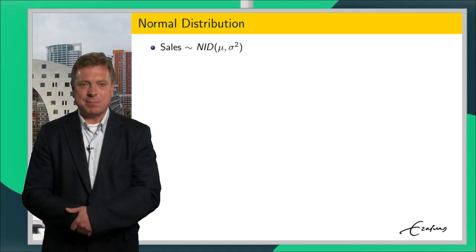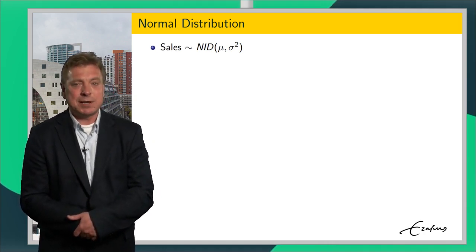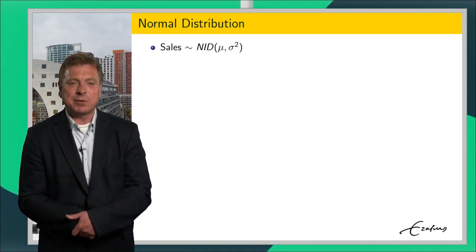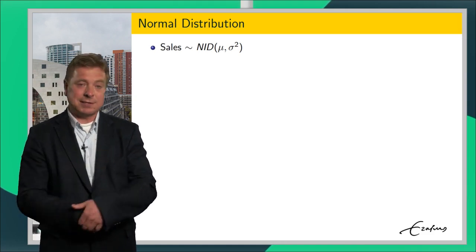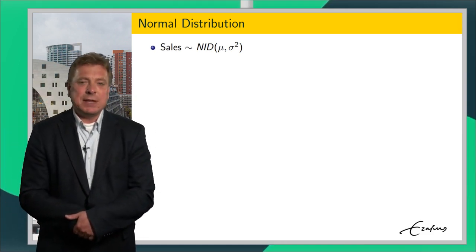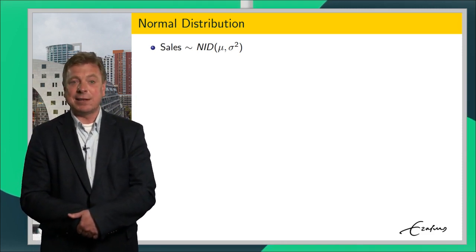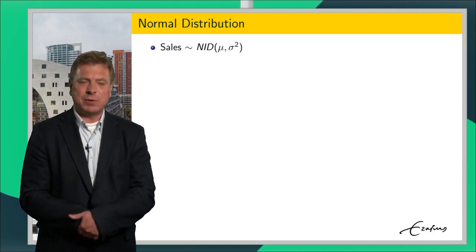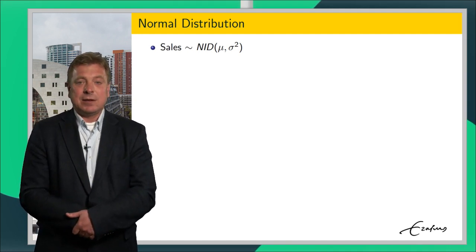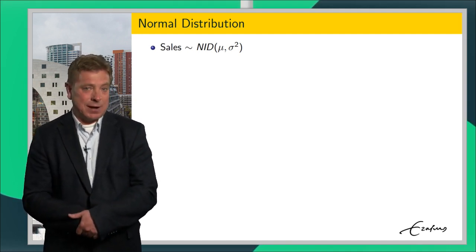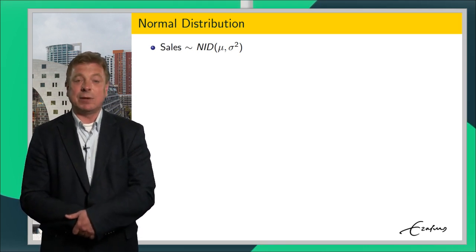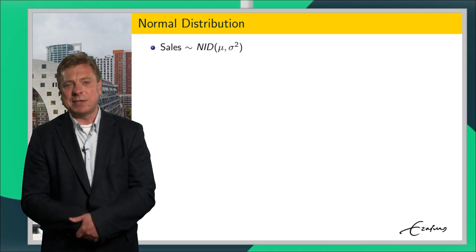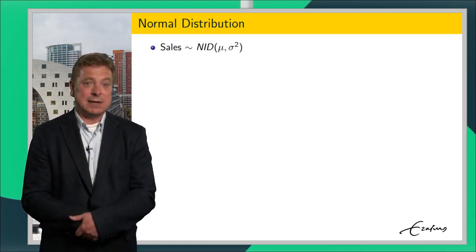The histogram of our sales data may suggest that the sales distribution can be approximated by a normal distribution. A simple way of summarising the 104 observations on sales is that the observations are considered to be independent draws from the same normal distribution with mean mu and variance sigma squared, abbreviated as NID. Note that we use Greek letters mu and sigma squared for parameters that we do not know and that we want to estimate from the observed data. The probability distribution of sales is described by just two parameters, the mean and the variance.